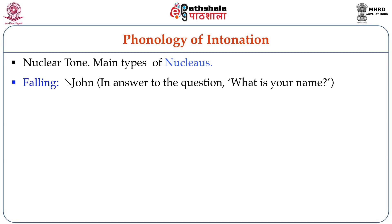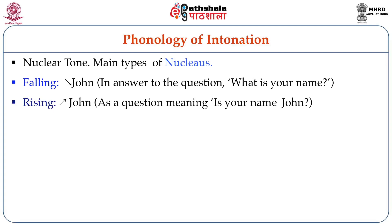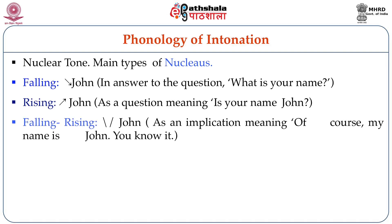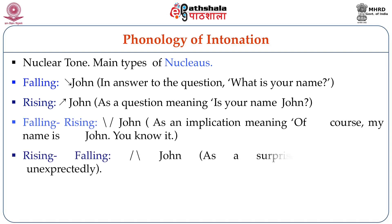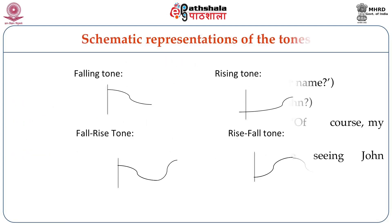Let's take an example of a single word said with these four different nuclear tones. Falling: 'John' — for example, in answer to the question 'What's your name?' Rising: 'John' — as a question meaning 'Is your name John?' Falling-rising: 'John' — implying 'Of course my name is John, you know it.' Rising-falling: 'John' — expressing surprise, seeing John unexpectedly. So these are the four main types.